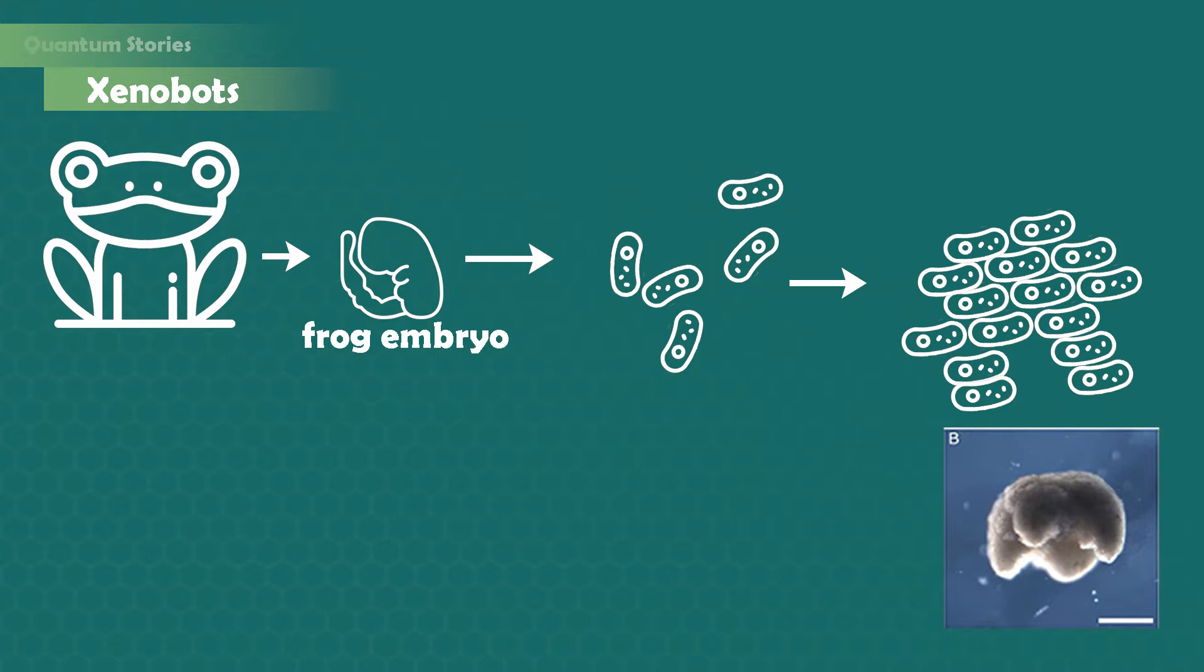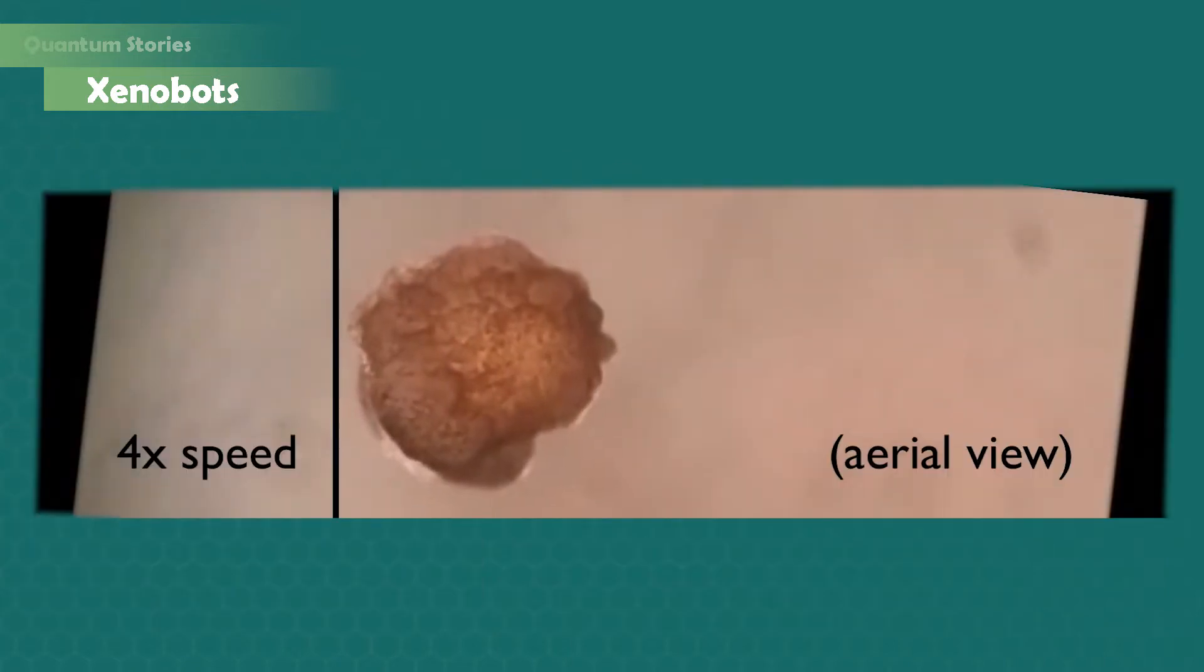Let's see some footage of the results. You can see how these little creatures move from left to right, exactly what the researchers asked them to do. It's the first time we are able to make living organisms behave the way we want by just taking cells from scratch.